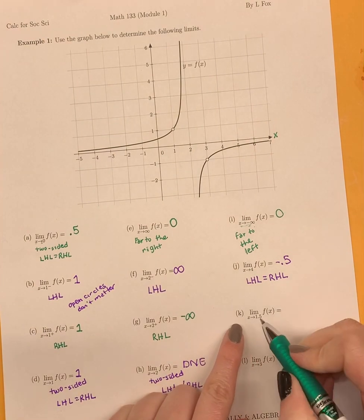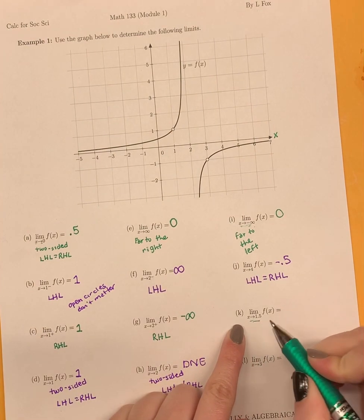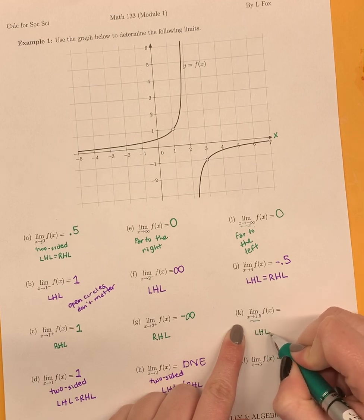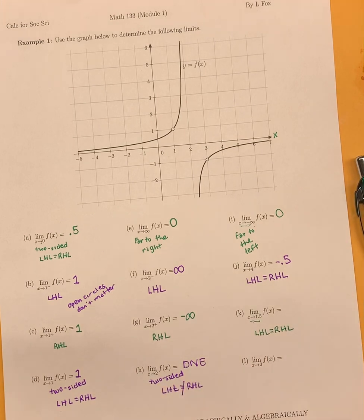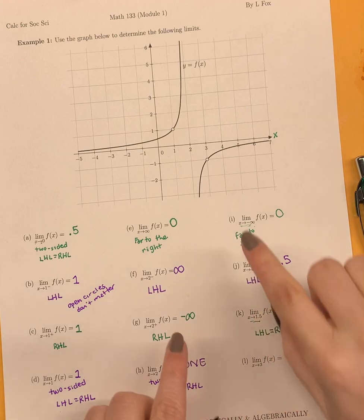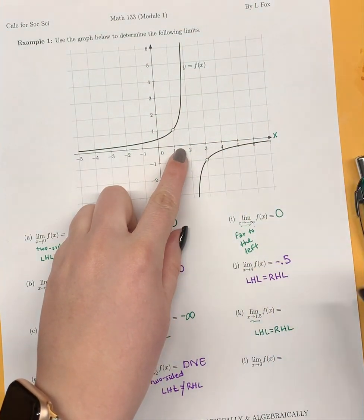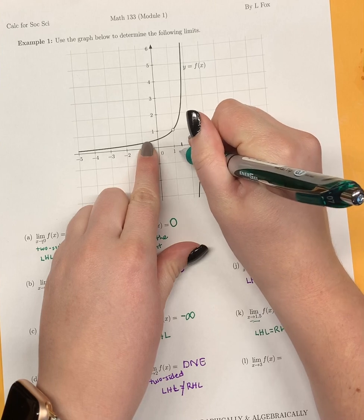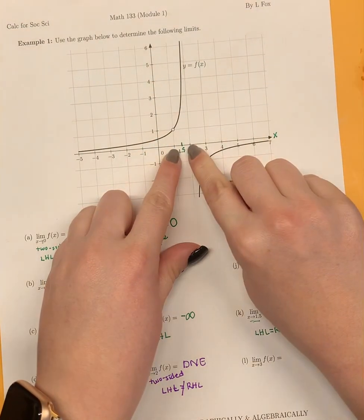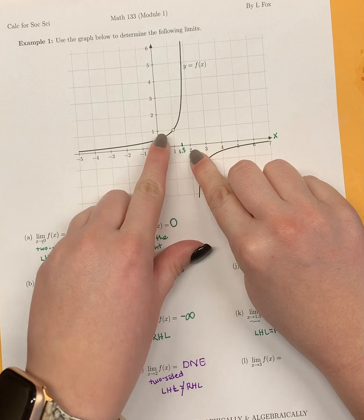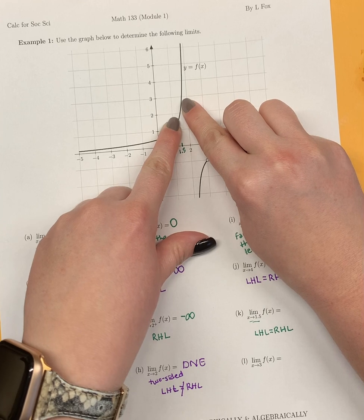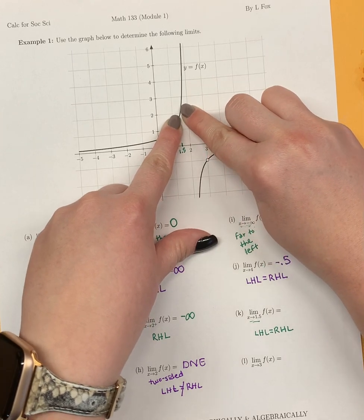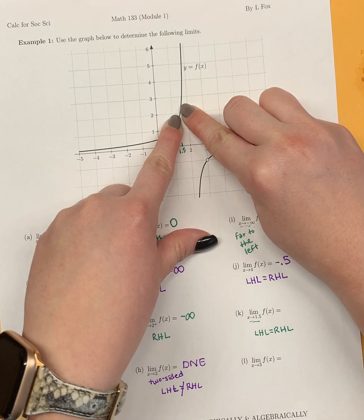We have the limit as x goes to 1.5 — making sure the left-hand limit equals the right-hand limit. The value 1.5 isn't labeled on the graph, so I'll mark it roughly. I hop on at x equals 1 on the left and x equals 2 on the right, then follow both toward x equals 1.5 to see if my fingers meet — and they do. The y value there is 2, so that's our answer.